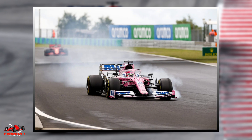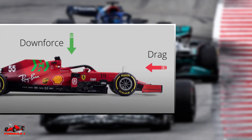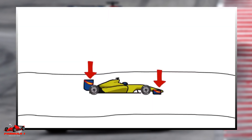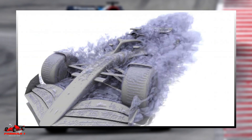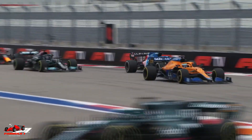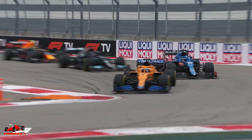To understand dirty air, we first have to understand downforce. Downforce is a measure of how much vertical load is created by a Formula 1 car's aerodynamic surfaces. At high speed, the downforce created by airflow around the body of an F1 car will be far in excess of its weight.